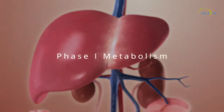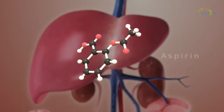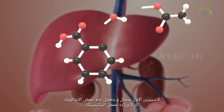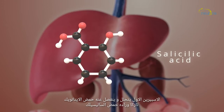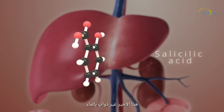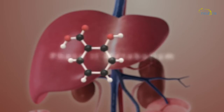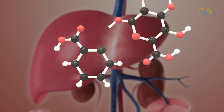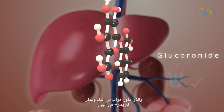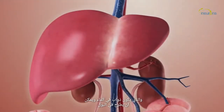It does this in a few steps. Phase 1 metabolism: first, aspirin is hydrolyzed, breaking off ethanoic acid and leaving behind salicylic acid. This salicylic acid isn't water-soluble, so it can't be excreted in urine yet. Phase 2 metabolism: an ionised group is then added to the salicylic acid, forming glucuronide, which is water-soluble and can be excreted in urine.